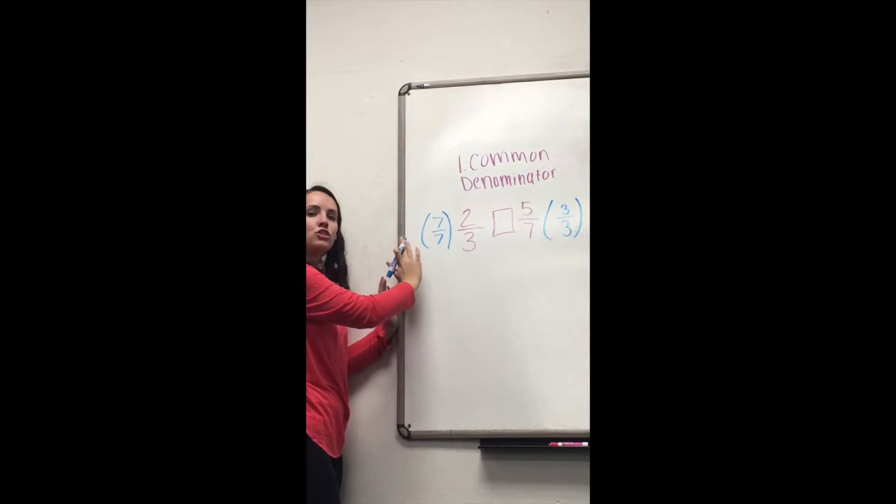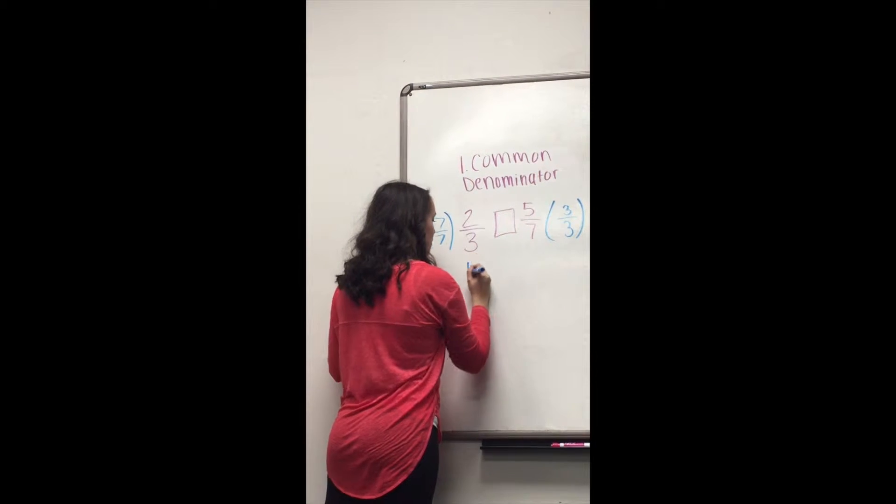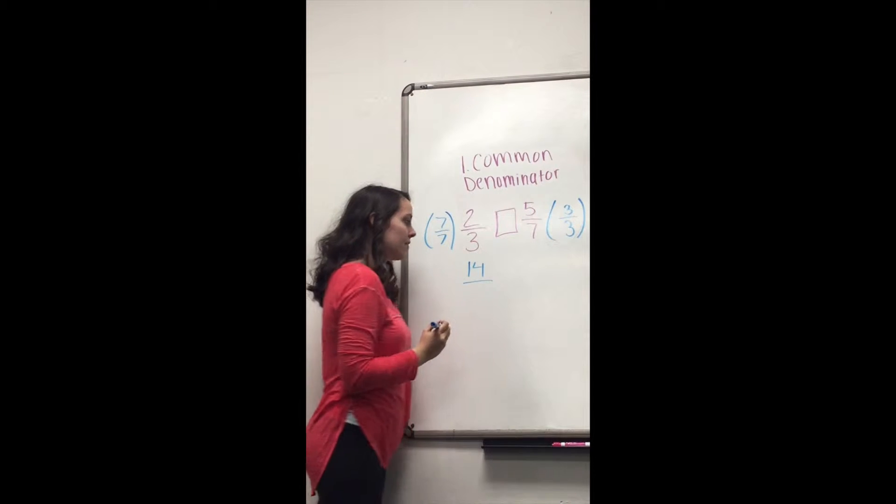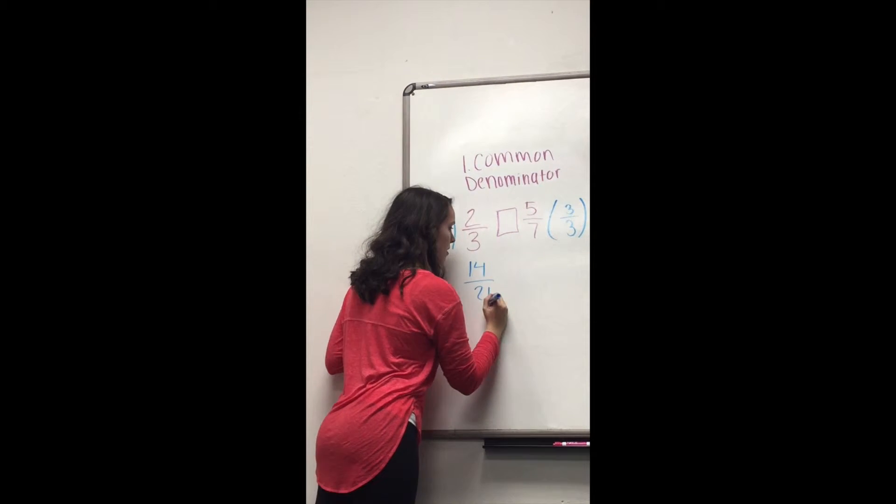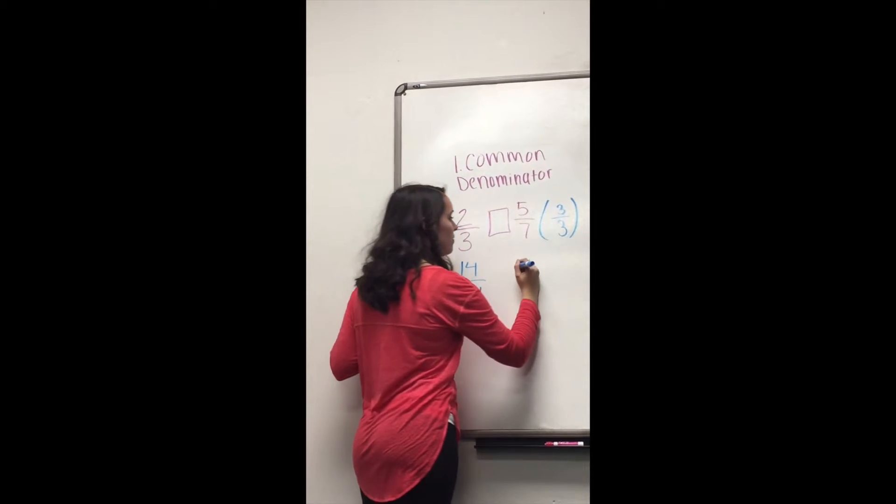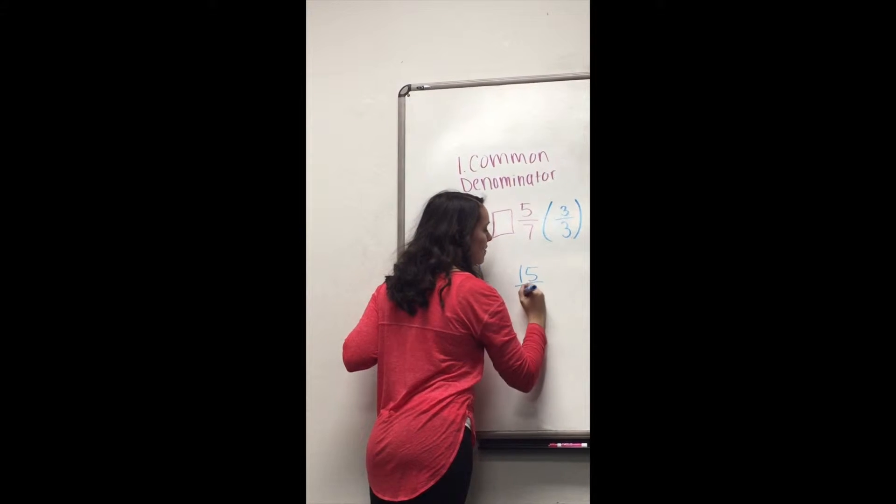So we're just going to multiply straight across. 7 times 2 is 14, and 7 times 3 is 21. And then 5 times 3 is 15, and 7 times 3 is 21.